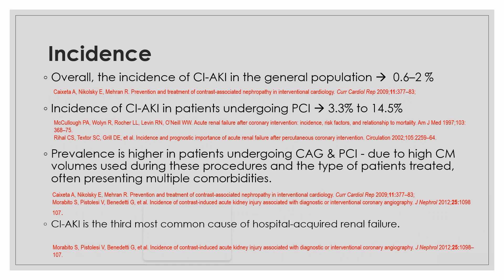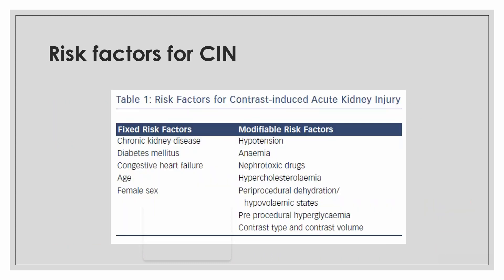Contrast-Associated Acute Kidney Injury is the third most common cause of hospital-acquired acute renal failure. There are multiple modifiable and non-modifiable risk factors for contrast-induced nephropathy. The four most important risk factors include chronic kidney disease, diabetes mellitus, hemodynamic instability, and contrast type and contrast volume.